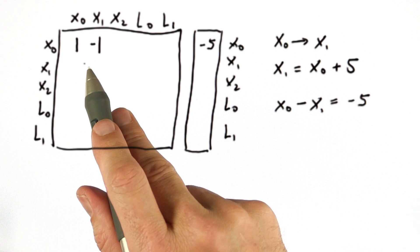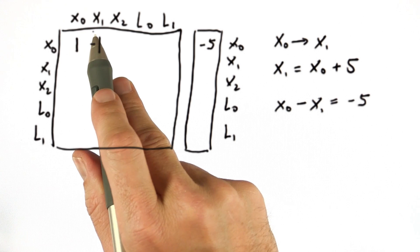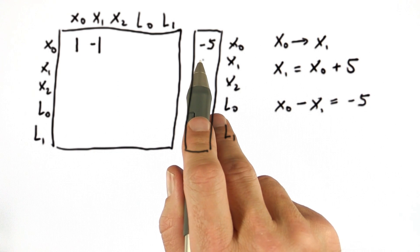These are added into the matrix that starts with 0 everywhere, and it's a constraint that relates x0, x1 by minus 5. It's that simple.